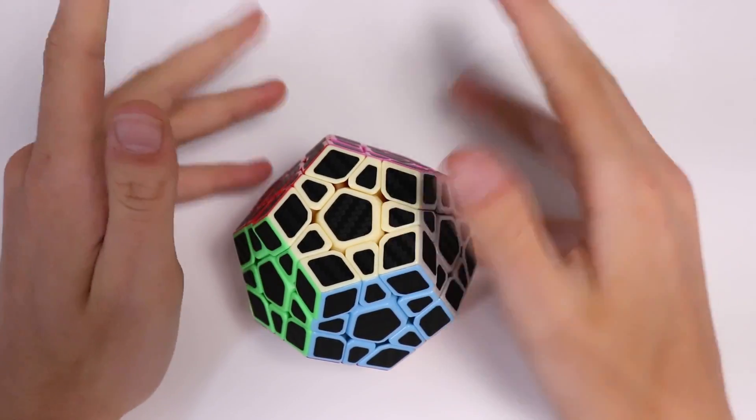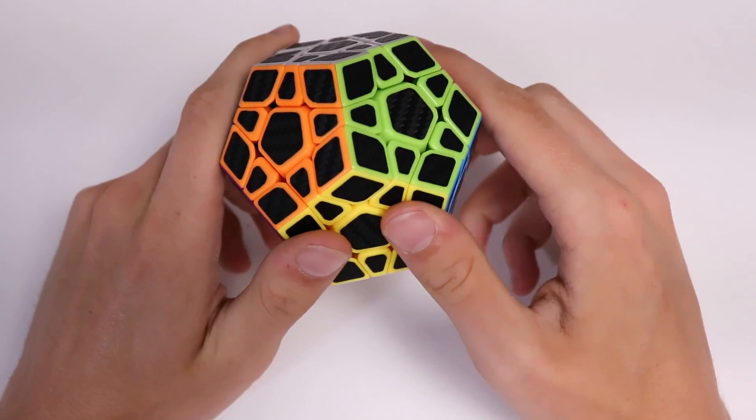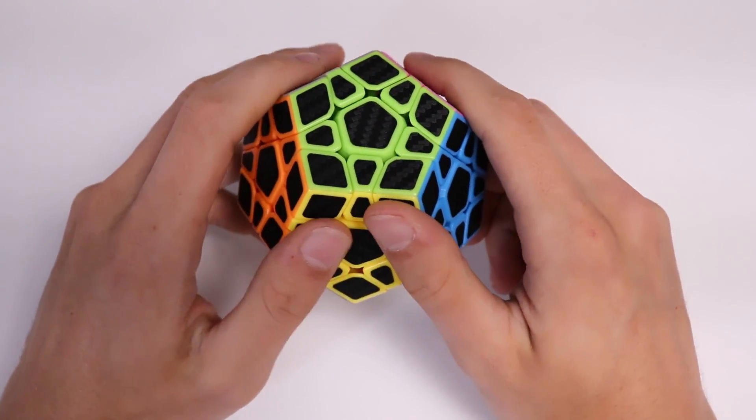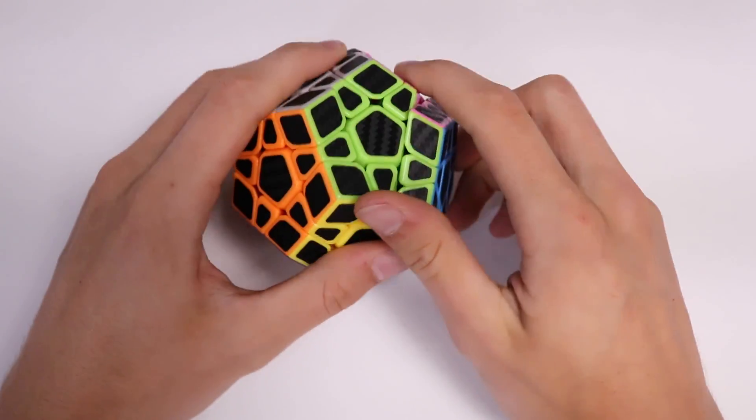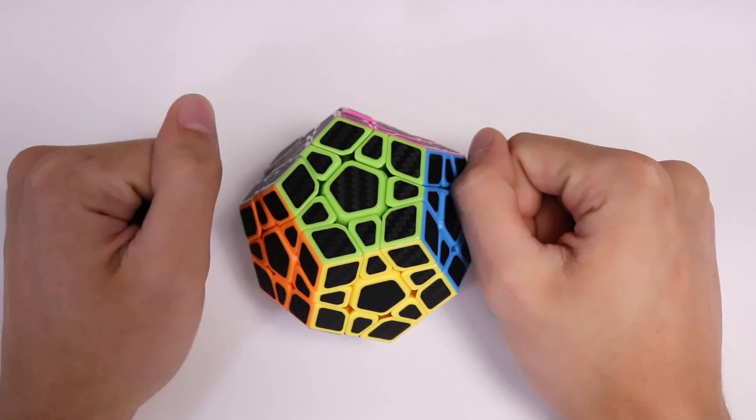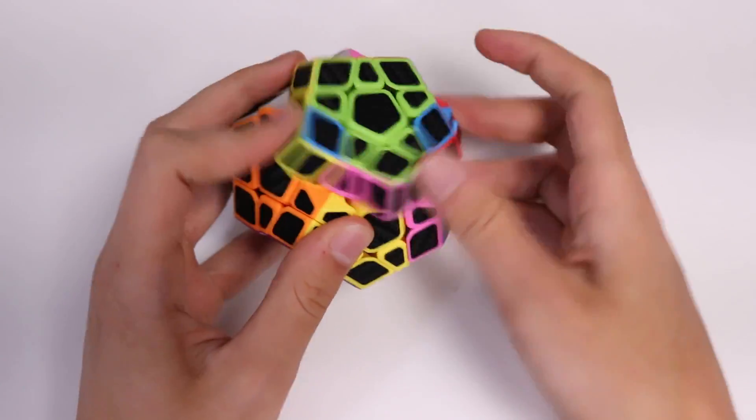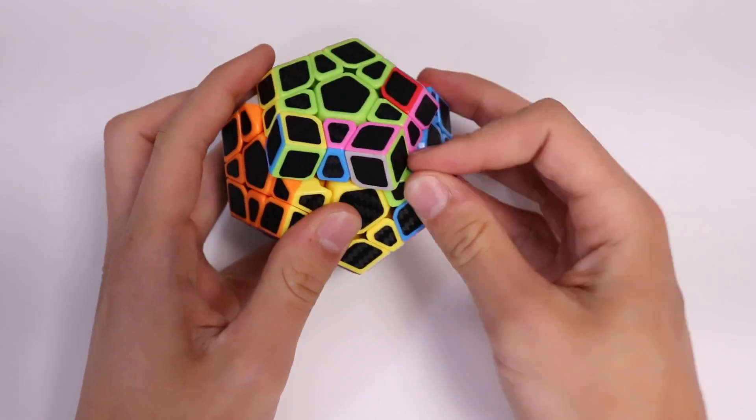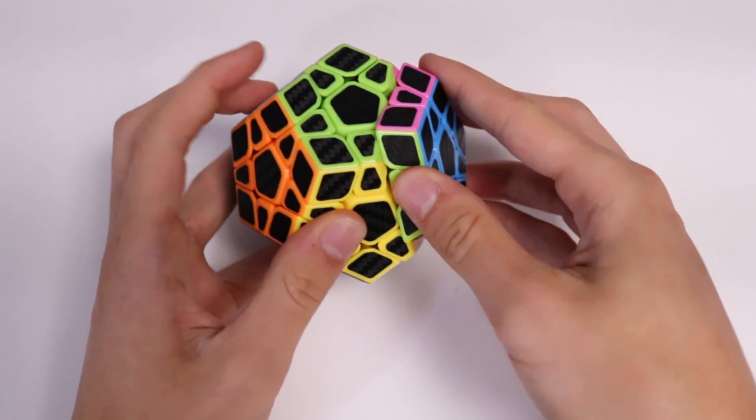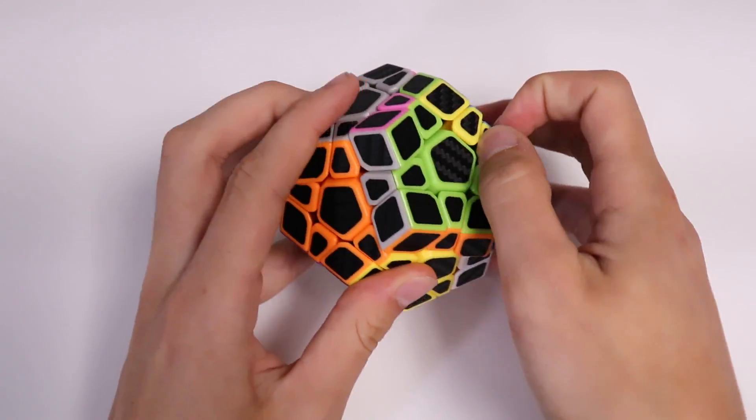Lockups happen from time to time. That's just because of the bad corner cutting and the not amazing turning of the puzzle. Flowing is okay. It can go from turn to turn reasonably well, but not amazingly.